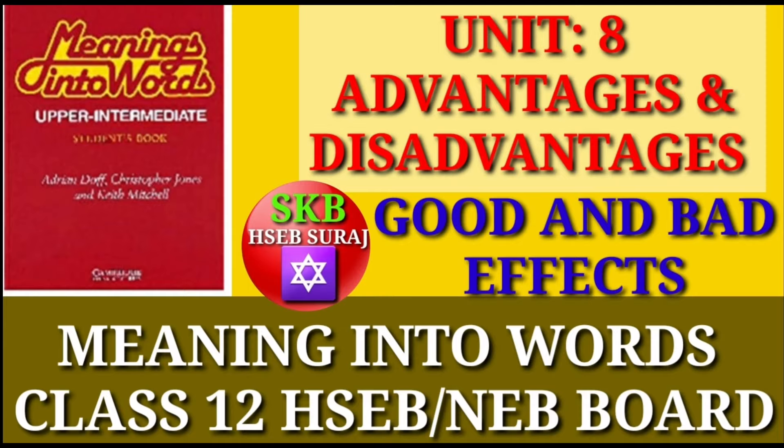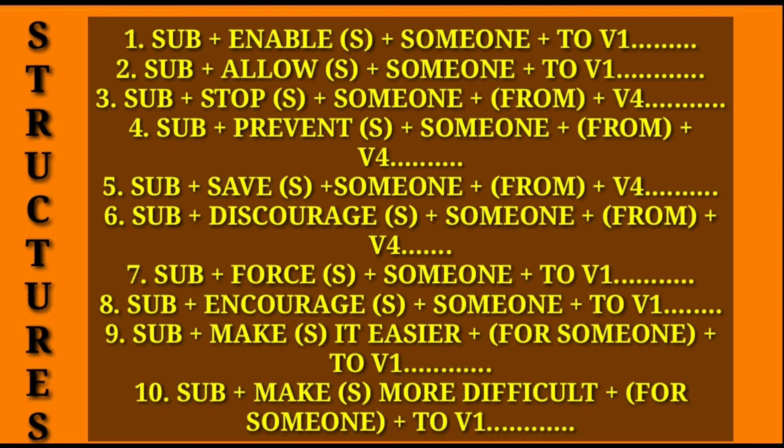In Nepali, these structures are called: Number 1 — Saksim banaun cha; Number 2 — Anumati diin cha; Number 3 — Rok cha; Number 4 — Rok tham garcha; Number 5 — Jogaun cha; Number 6 — Nira sahid banaun cha. The English structures are: Number 1 — Subject + enable/enables + someone + to-V1 + remaining part; Number 2 — Subject + allow/allows + someone + to-V1 + remaining part; Number 3 — Subject + stop/stops + someone + (from) + V-ing + remaining part.